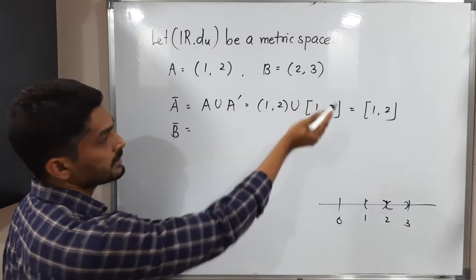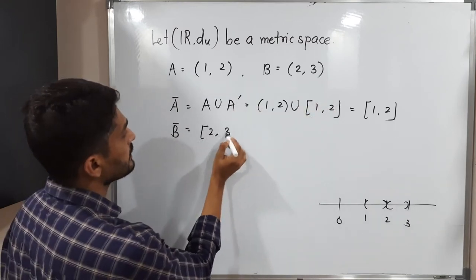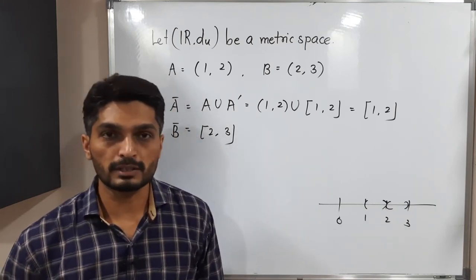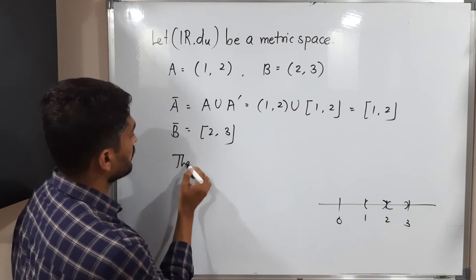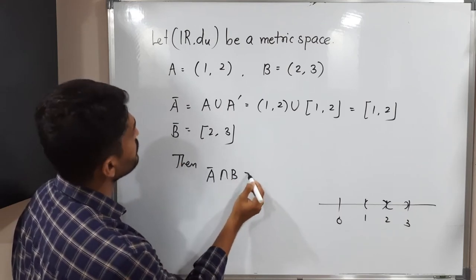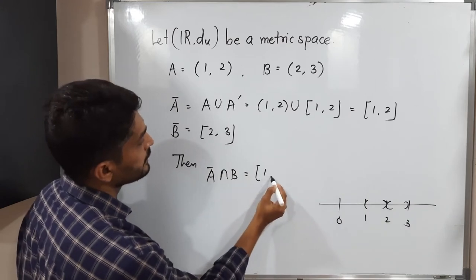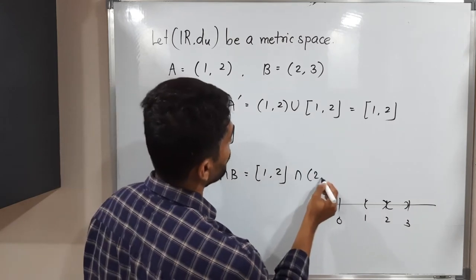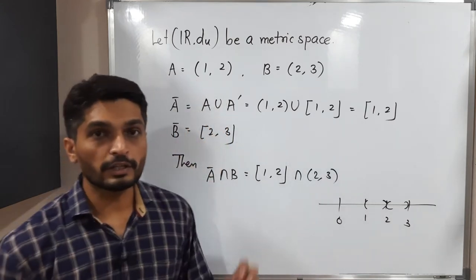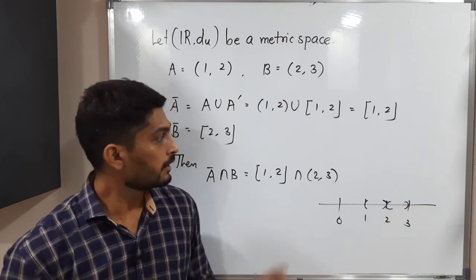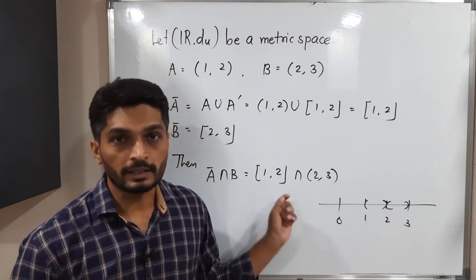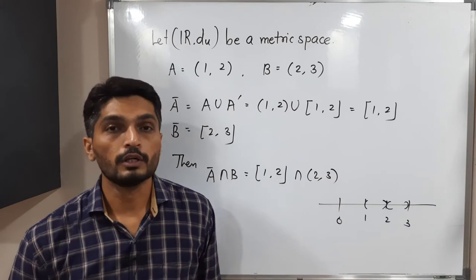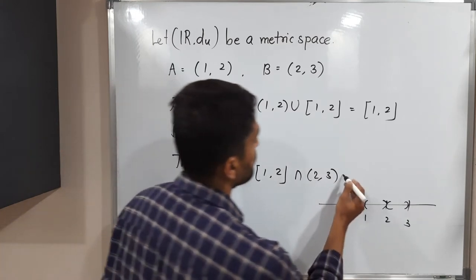Similarly, we can find B-bar. By the same reasoning, B-bar equals the closed interval [2, 3]. Now let us check A-bar intersection B. A-bar is the closed interval [1, 2] and B is the open interval (2, 3). You might think point 2 is common between them, but while the closed interval contains 2, the open interval does not contain 2. So nothing is common between them and the intersection is phi.